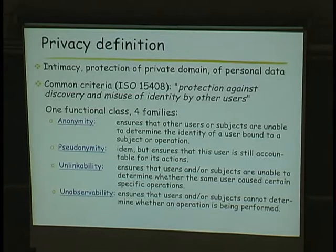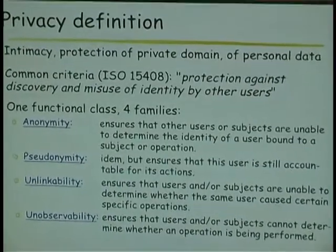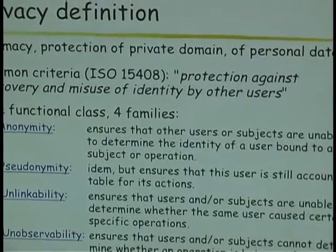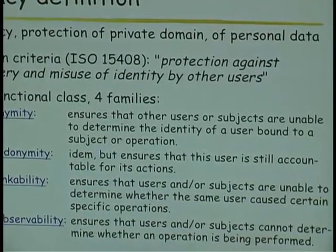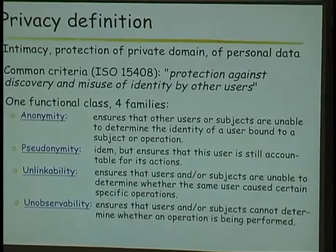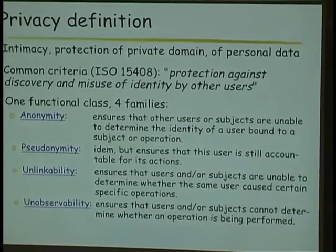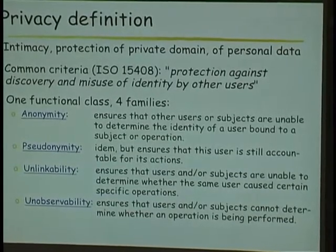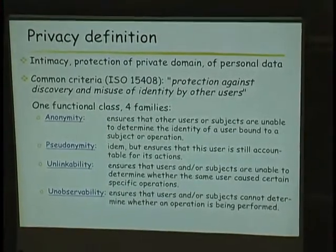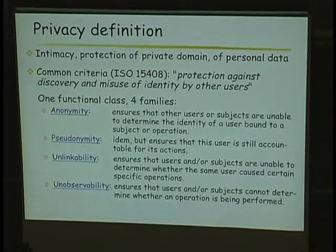We have a formal definition of privacy in the Common Criteria — the first time security requirements were applied to privacy. In the TCSEC or the ITSEC in Europe, there was no notion of requirements for privacy in security. In the Common Criteria, for the first time, you have some requirements for privacy: one functional class with four families. The definition is protection against discovery and misuse of identity by other users. Only identity — that's not enough in my view, but at least that's something.